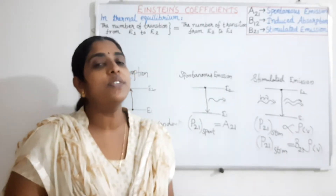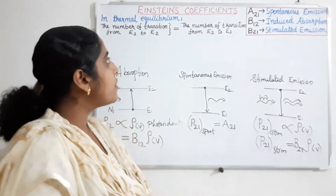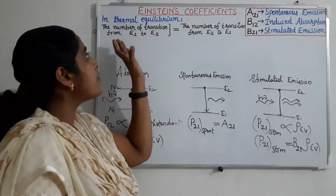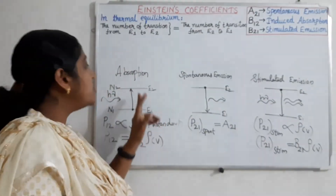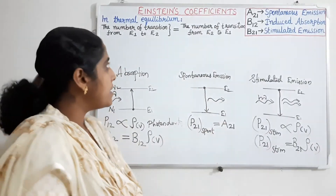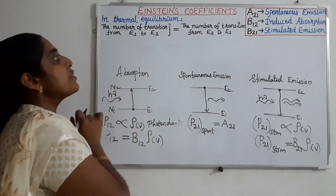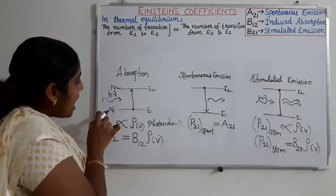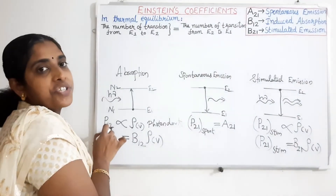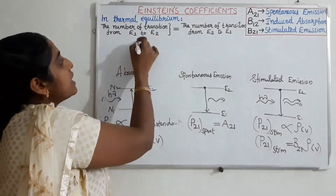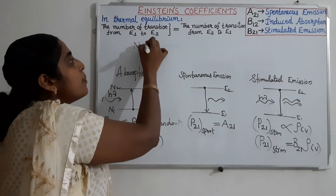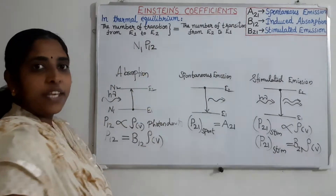A corresponds to spontaneous emission and B corresponds to stimulated emission. Now we can see how these Einstein's coefficients are related. For that, we consider thermal equilibrium. In thermal equilibrium, the number of transitions from E1 to E2 is equal to the number of transitions from E2 to E1. The number of transitions from E1 to E2 depends upon the number of atoms in the lower energy level and the probability of transition P12, giving N1 times P12.